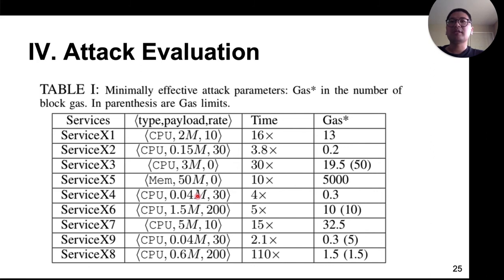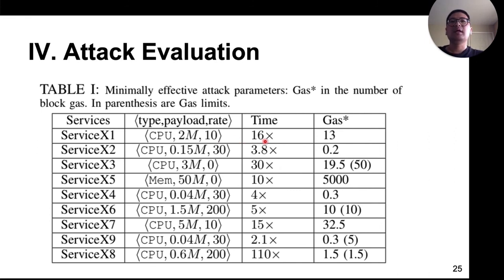This table summarizes evaluation results on all nine RPC services. The second column shows the attack parameters used. For example, in ServiceX1, we send eth_call to execute CPU-intensive operations like hash computation for 20 million times at a rate of 10 requests per second, causing a 16x slowdown. The last column shows the consumed gas of each request. Overall, our attack strategies are effective on all nine RPC services, causing different levels of slowdown to each.